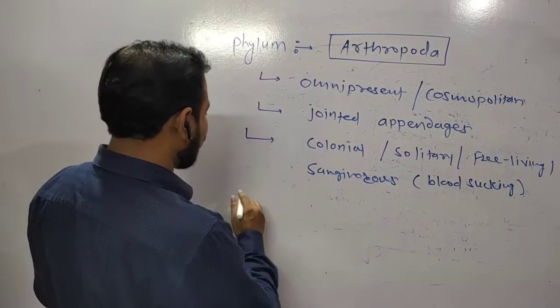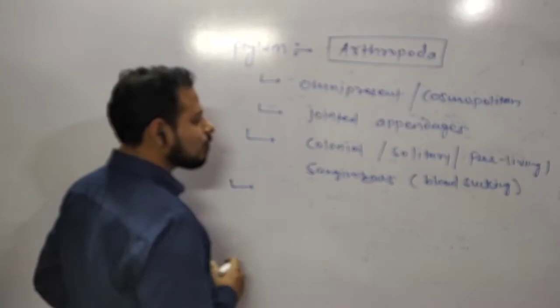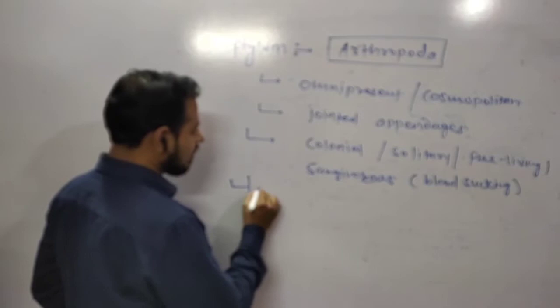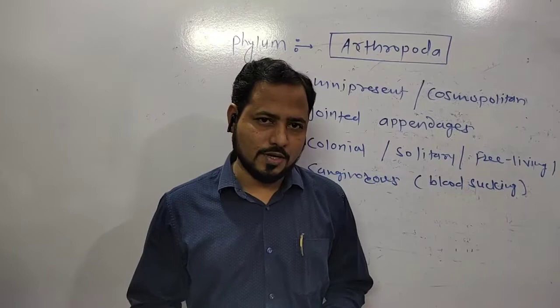We will talk about their body features, different systems, and you have to learn them well. One by one you will see their body makeup - the form, the divisions. These are divided into three parts: head, thorax meaning chest, and abdomen. In these three parts you can divide the body of these animals.